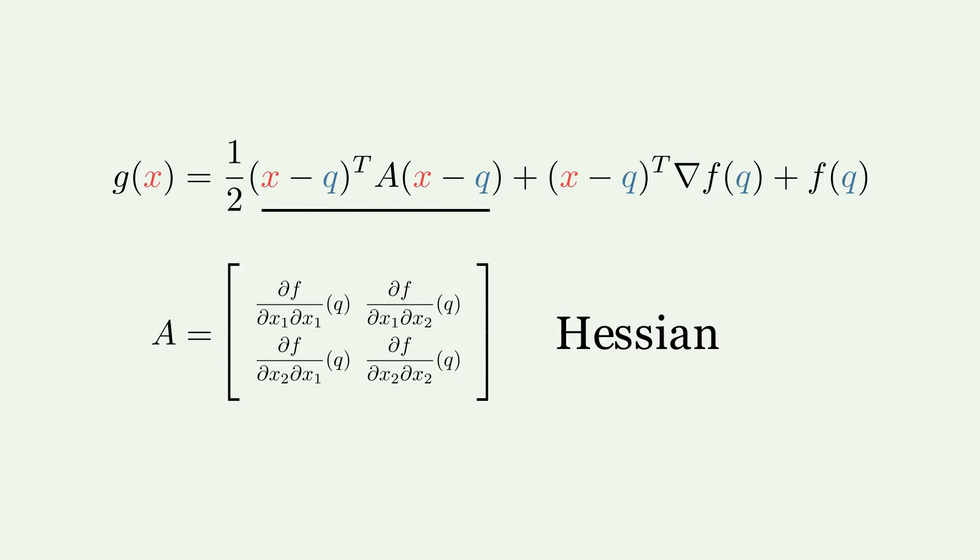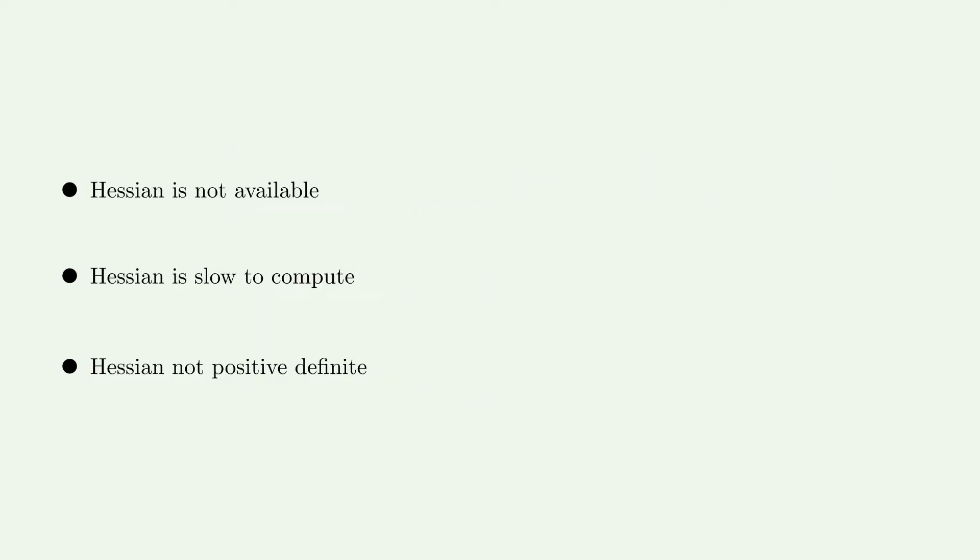The Newton algorithm then uses the analytic minimum of this function to compute the next point. However, Newton's algorithm in its simple form might fail due to several reasons, and they are all connected to the Hessian. First, it might be that we simply don't have the Hessian available. In this case we just cannot use Newton's algorithm.